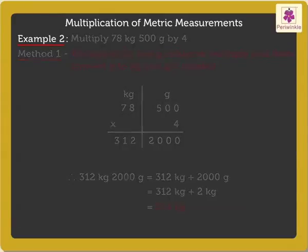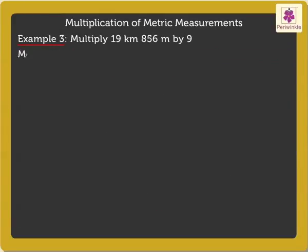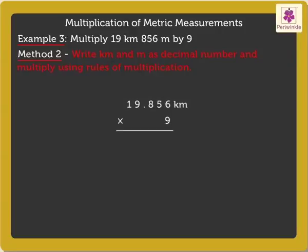Now, let's quickly solve an example using the second method. Write kilometres and metres as decimal number and multiply using rules of multiplication. We get 19.856 kilometers as decimal number. Thus, on multiplying, we get 178.704 kilometers.